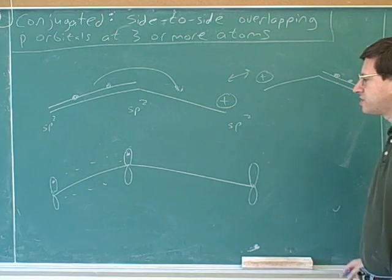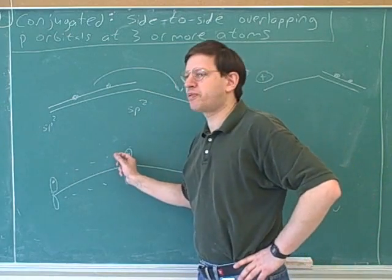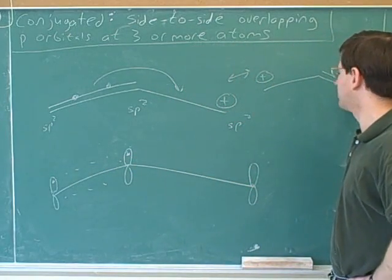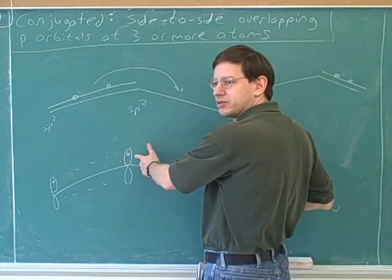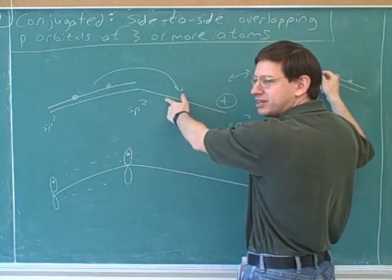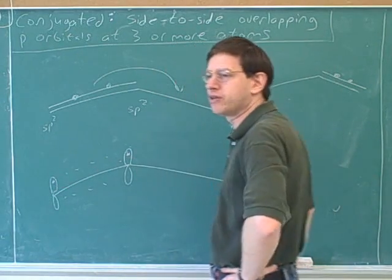And this really reinforces the point I was making a second ago that, in fact, these two electrons are spread over all three of these orbitals. Now in this picture, it looks like the two electrons are localized between these two orbitals. While neither of these two pictures is completely accurate, the true molecule is a blend. In reality, the two electrons are spread over all three of these orbitals.